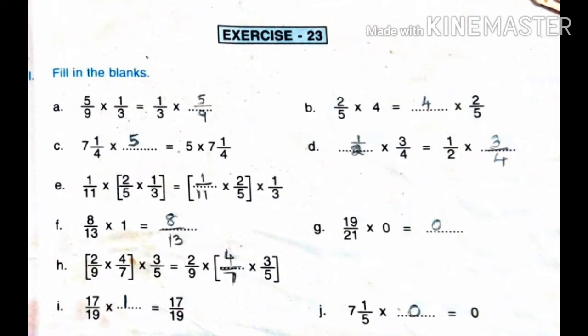We multiply two fractions: 5/9 into 1/3 equals 1/3 into dash. So, what number fills the blank? The answer is 5/9.